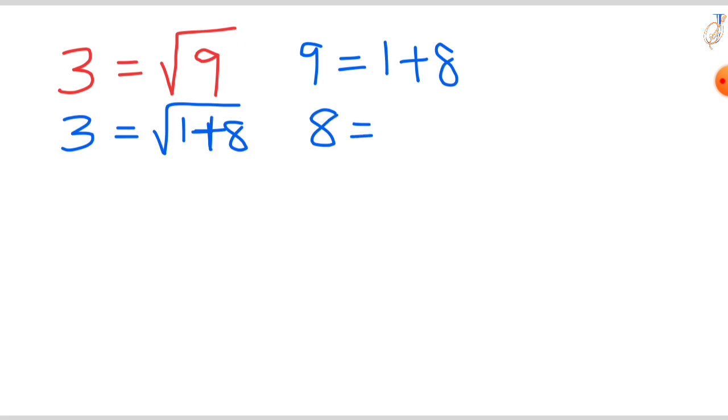If you find the factors of 8, it is 2 times 4. Instead of 8, we can write it as 2 times 4, and this 4 we can write as root 16.